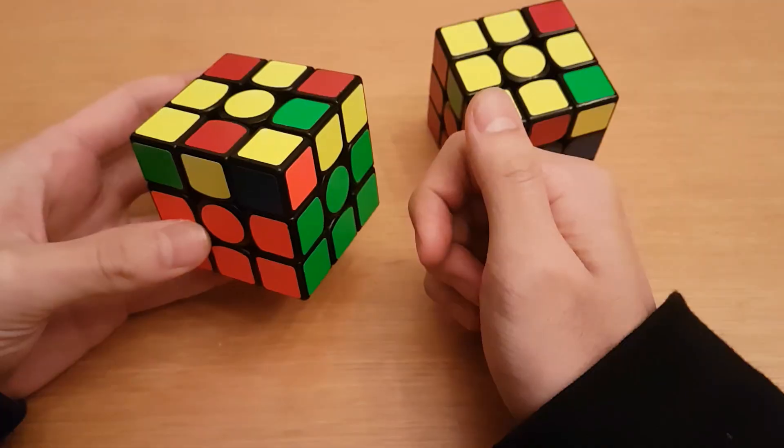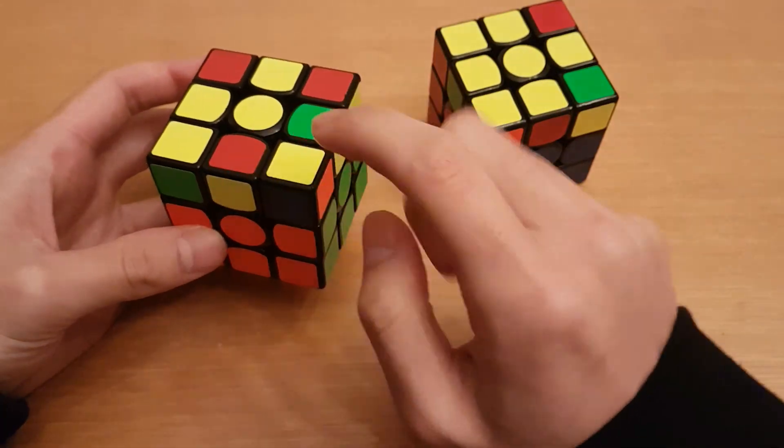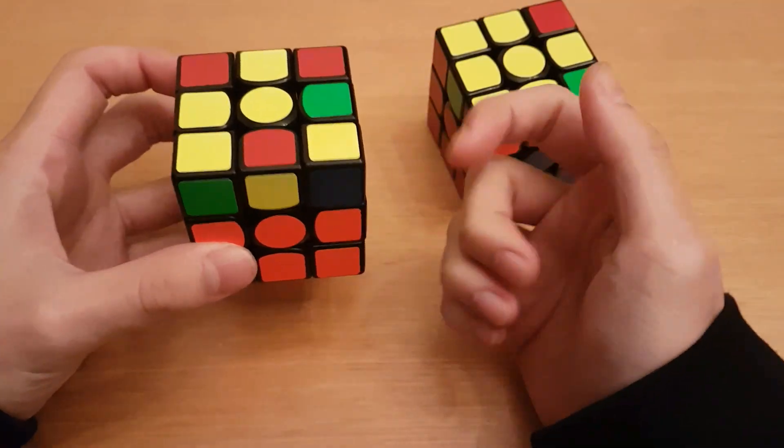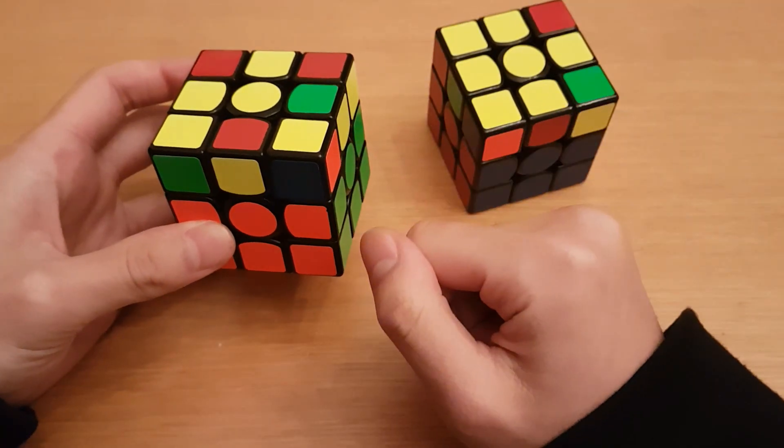What you can do is an algorithm that flips the edges but keeps the corner orientation the same, so you only have to look once. It's basically 1-look OLL, but you're still using two algorithms.